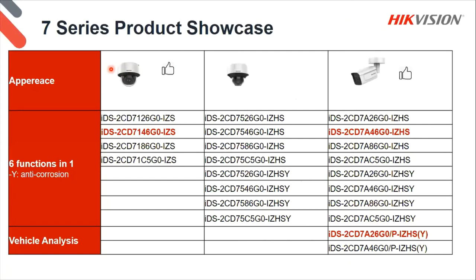The product showcase includes indoor domes, outdoor domes, and bullets. For vehicle analysis, there's only one specific model that does vehicle recognition for ANPR usage — that one is not switchable; it's optimized for that one function. The rest of the cameras can do just about any one of those six functions. We also have the dash-Y model, which means they are anti-corrosive cameras — usable in corrosive plants, with corrosive materials, gases, liquids, coastal areas. They have anti-corrosive coating or stainless steel housing, depending on the grade of anti-corrosion you need.